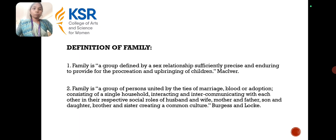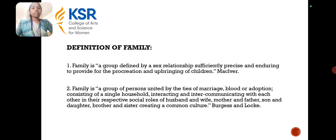Family is a group defined by sex relationship sufficiently precise and enduring to provide for a procreation and upbringing of children. This is the definition given by Mac Clever. And family is a group of persons united by the ties of marriage, blood or adoption, consisting of a single household, interacting and intercommunicating with each other in respective social roles of husband and wife, mother, father, son, daughter, brother, sister, creating a common culture. This definition was given by Vargas and Lokhi.